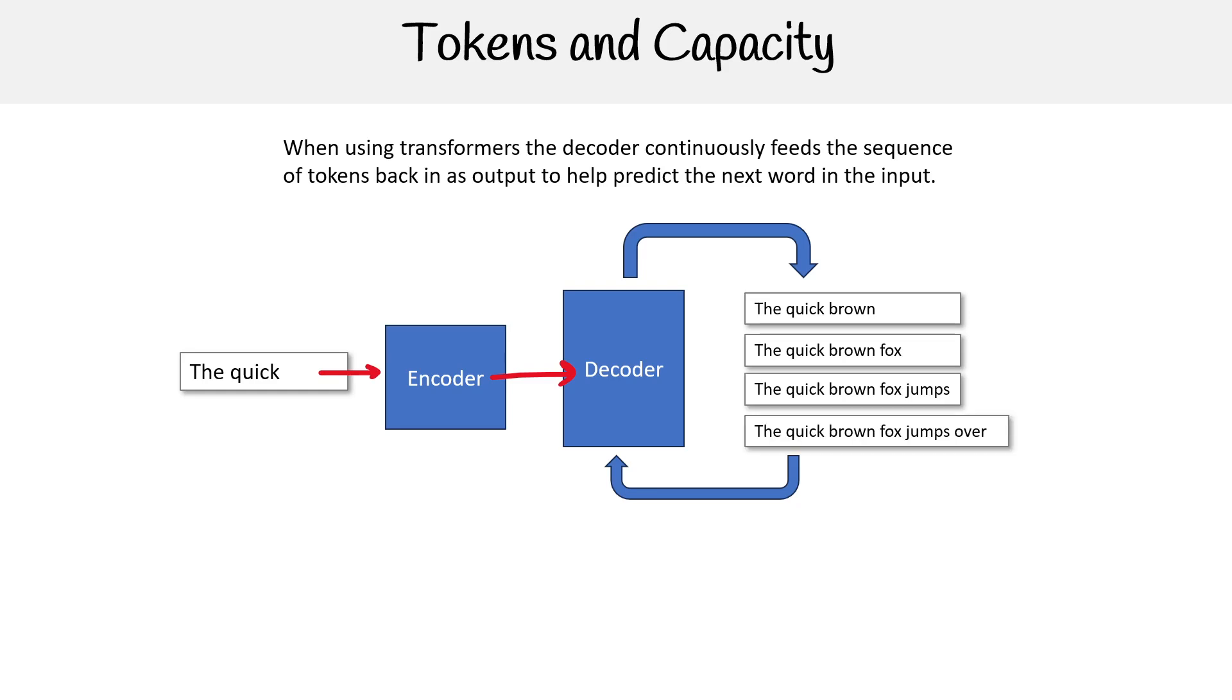The question is, what is the capacity required to run this? There are two components we care about: memory and compute. For memory, each token in a sequence requires memory. As the token count increases, the memory increases. The memory usage eventually becomes exhausted and you cannot produce anymore.